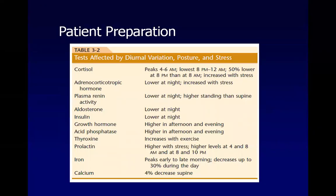Diurnal variation refers to variation that manifests in the levels of substances based on different time intervals. Some substances have higher values in the morning, others in the evening. For example, cortisol has a peak level in the morning around 4 to 6 AM and its lowest level at 8 PM to 12 AM, with a difference of around 50 percent between the two levels.